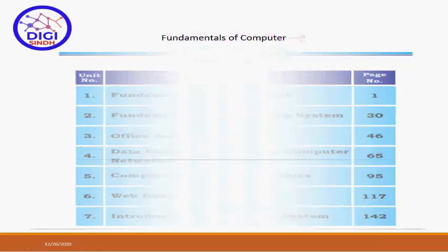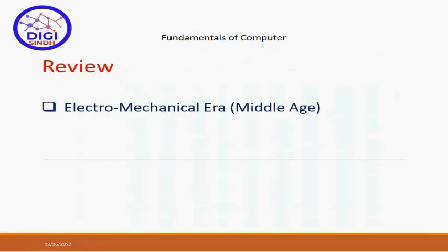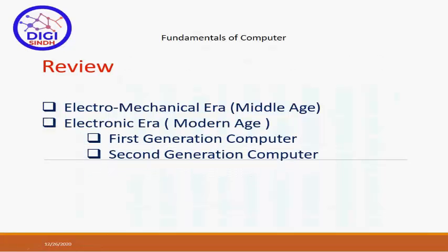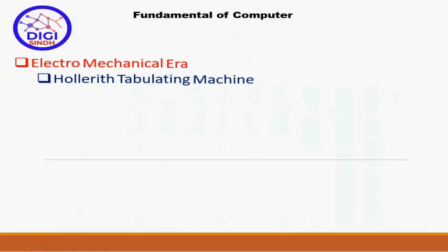اس کے اندر ہم نے تین eras کے بارے میں پڑھا - evolutions of the computer - جس میں first period تھا 'dark ages'، اس کے بعد 'middle ages'، اور اس کے بعد 'modern ages'۔ Last lecture میں ہم نے electromechanical era، middle age، اس کے بعد electronic era پڑھی تھی۔ Electronic era کے اندر first، second، third، fourth اور fifth generation of the computer cover کیے تھے۔